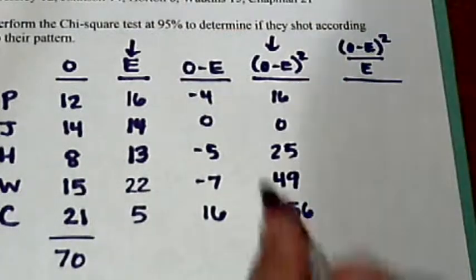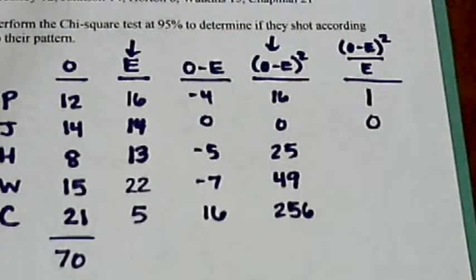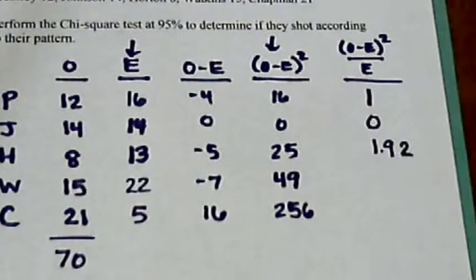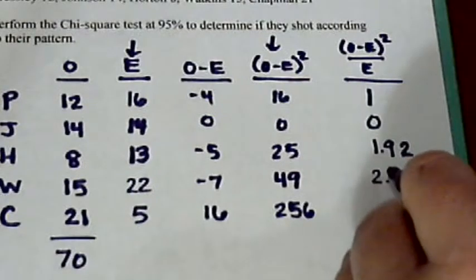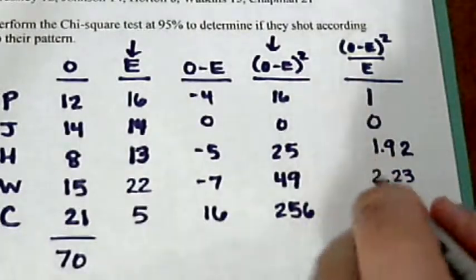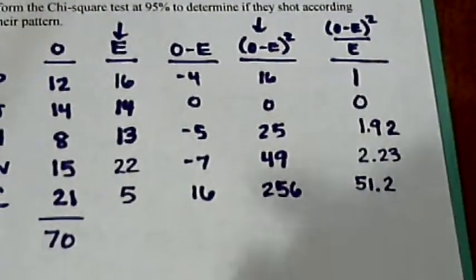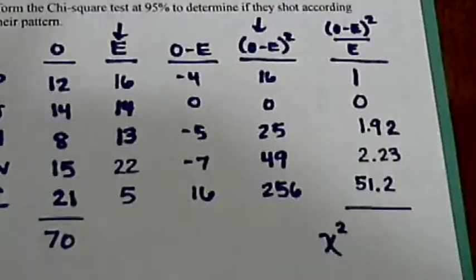16 divided by 16 would be 1. 0 divided by 14 would be 0. 25 divided by 13 is going to give us about 1.92. 49 divided by 22 is about 2.23. And then finally, 256 divided by 5 is going to give us 51.2. At this point, we add this column together, and this gives us our chi-square value.